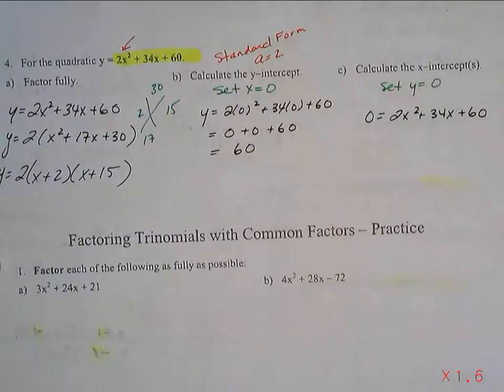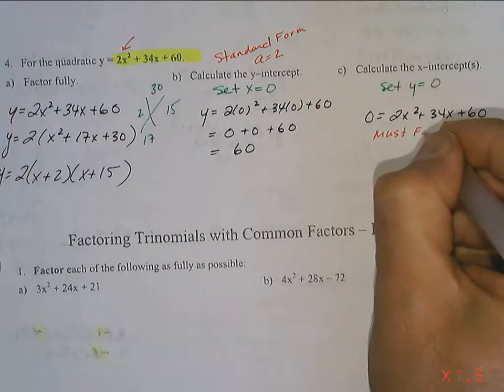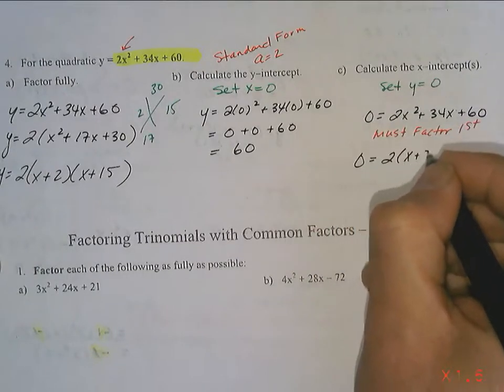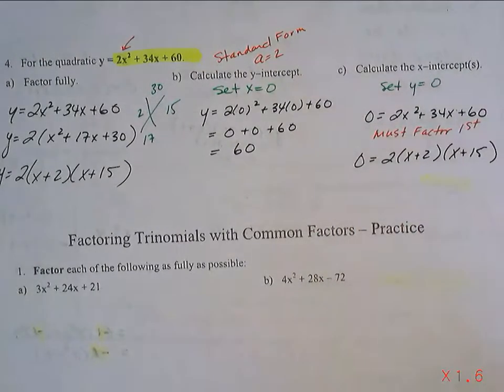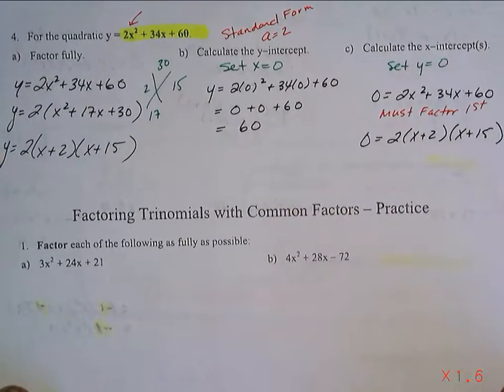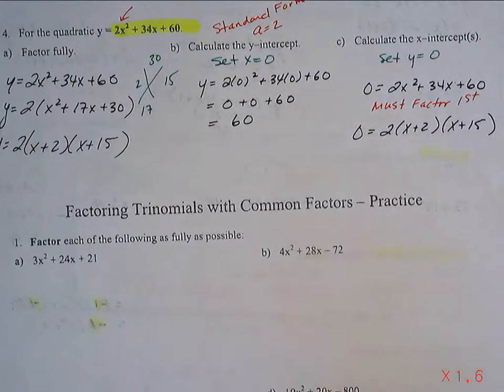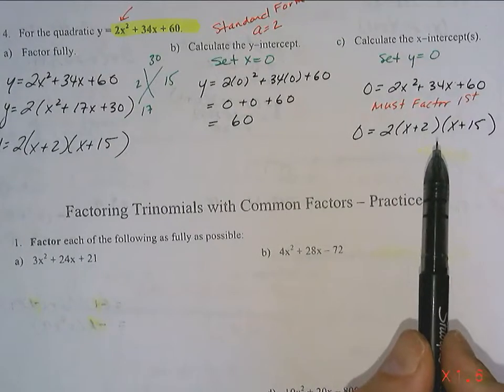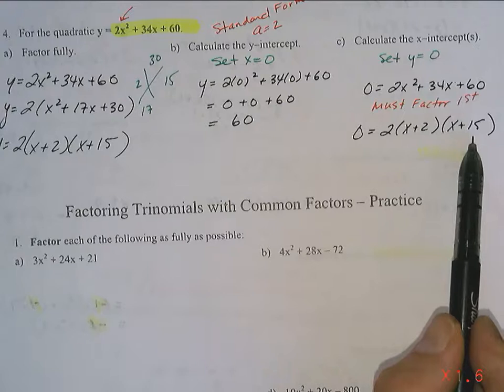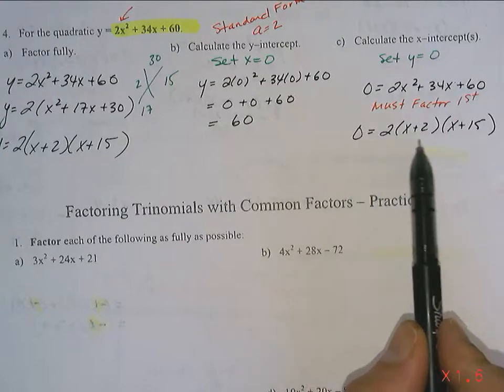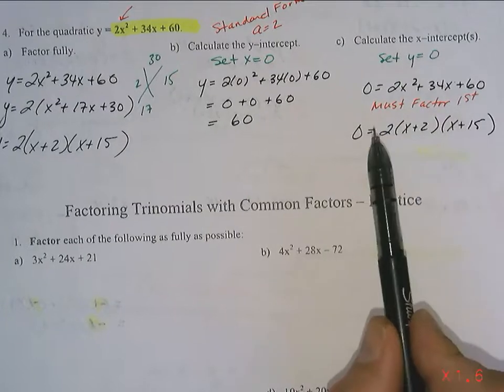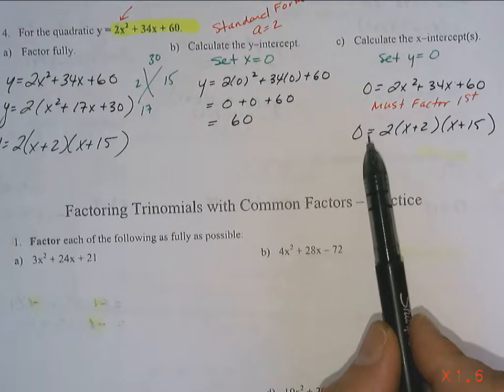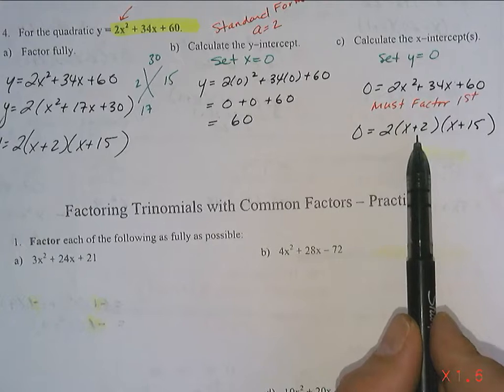which means over here, we now have 0 equals 2 times x plus 2 times x plus 15. Now, let's be very clear about what this says over here. For some value of x that we're interested in, this right-hand side for that value of x will equal 0. So, we're looking for a value of x that will make the right-hand side equal 0. Look at the 2. Does the 2 do anything to help us get to 0? No, it's just the 2. So, if we're going to get to 0,